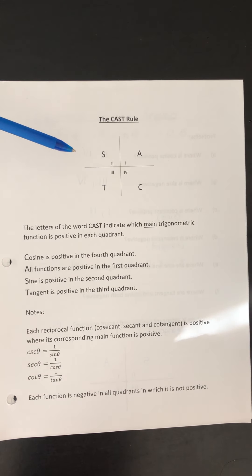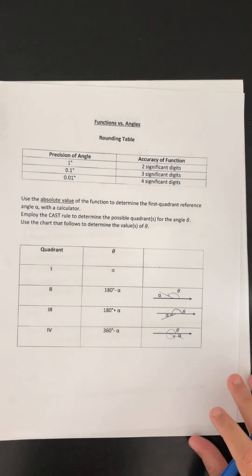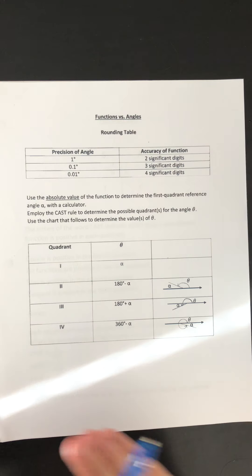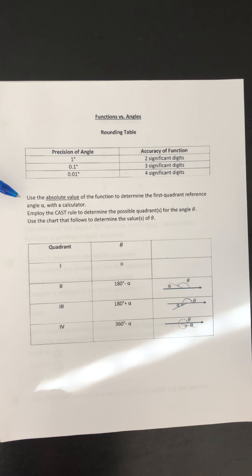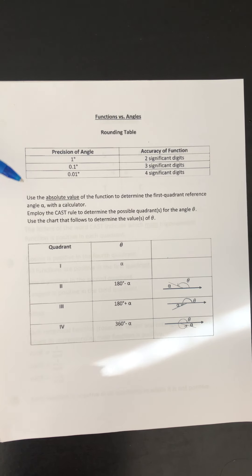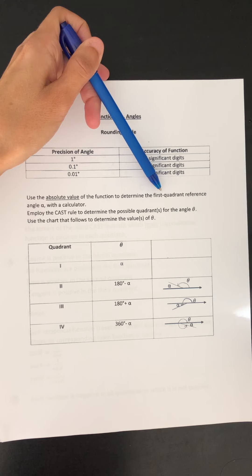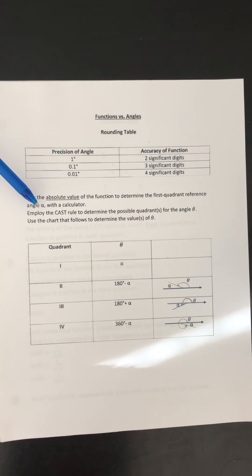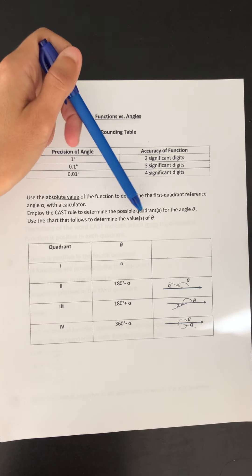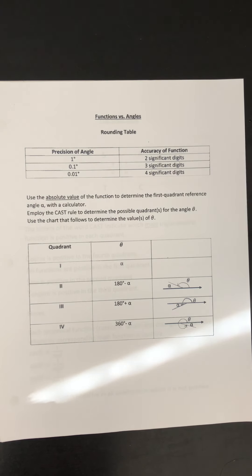I have the diagram here in front of us for reference. This is the method we're going to use in our lesson today — it has three steps. We're going to use the absolute value of the function to determine the first quadrant reference angle alpha with a calculator. The key language here is that we're using the absolute value, meaning we will not work with a negative number — we will use a positive number only. After we have that reference angle, we'll use the CAST rule to determine the possible quadrants for theta.